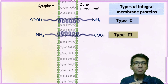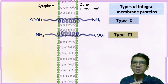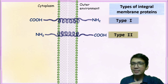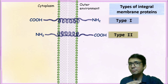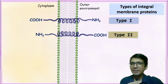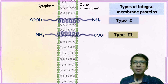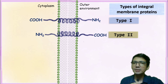The type 2 integral membrane protein is completely opposite of type 1. In this case, the amino group remains in the cytoplasm whereas the COOH group remains in the outer environment.